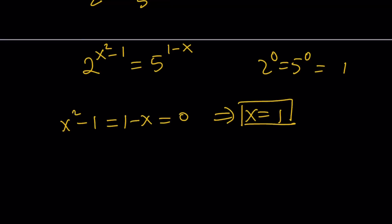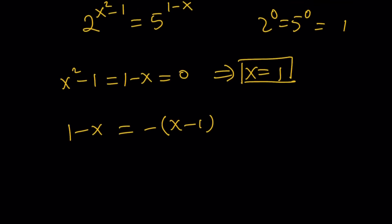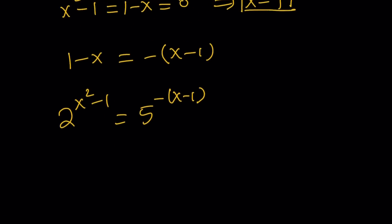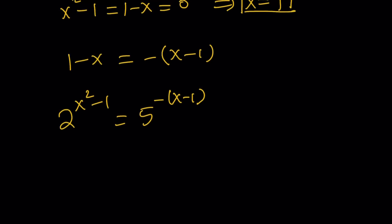So here's what we're going to do. I would like to write the 1 minus x as negative 1 times x minus 1. Notice that when you have a minus b, it's basically the opposite of b minus a. So now we can write this as 5 to the power with a negative sign in front of it, x minus 1. The opposite of x minus 1 is 1 minus x, right? You can test with numbers. And x squared minus 1 is factorable into x plus 1 times x minus 1. This is the fun part.